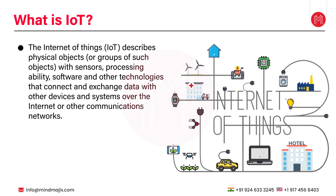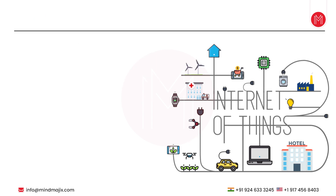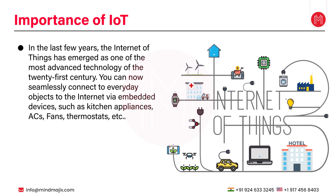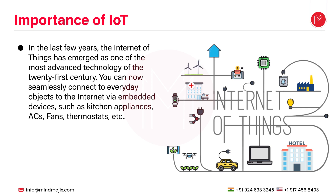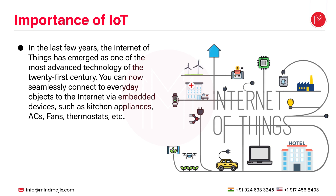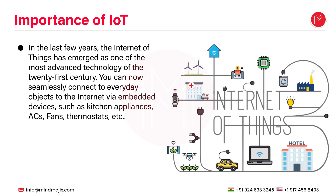Now let us understand why we need to study IoT and what is its importance. In the last few years, the Internet of Things has emerged as one of the most advanced technologies of the 21st century. You can now seamlessly connect everyday objects to the internet via embedded devices such as kitchen appliances, ACs, fans, thermostats and baby monitors, allowing smooth interaction between people, processes and things. Physical things can share and collect data with the least amount of human intervention using low-cost computers, the cloud, big data, analytics and mobile technologies. Digital systems can record, monitor and change the communication between connected things in the current hyper-connected environment. The physical and digital world often collide, but they offer numerous benefits when they work together.